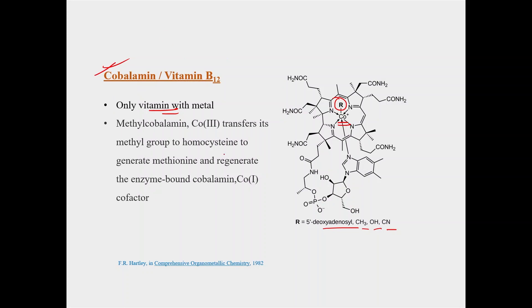So one of the function of this methyl cobalamin, methyl cobalamin means when R is equal to CH3, is the transfer of methyl group for the transfer of homocysteine to methionine. So methylcobalamin Co3+ transfers its methyl group to homocysteine to generate methionine and regenerate the enzyme bound cobalamin Co1+ cofactor. So in the presence of this methylcobalamin, homocysteine can be used to generate methionine. So one of the functions of cobalamin is methyl transfer.